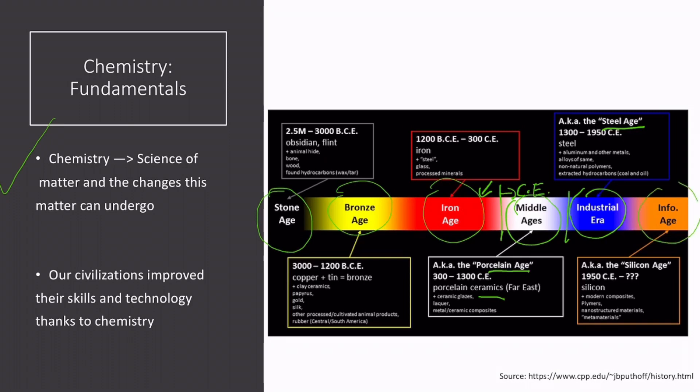Finally, we have the Information Age, which is our current period, and silicon has been important for making things like transistors, which are at the core of computers and cell phones.